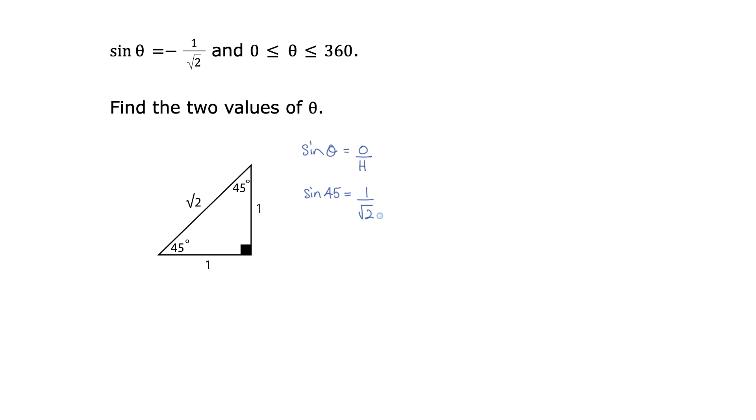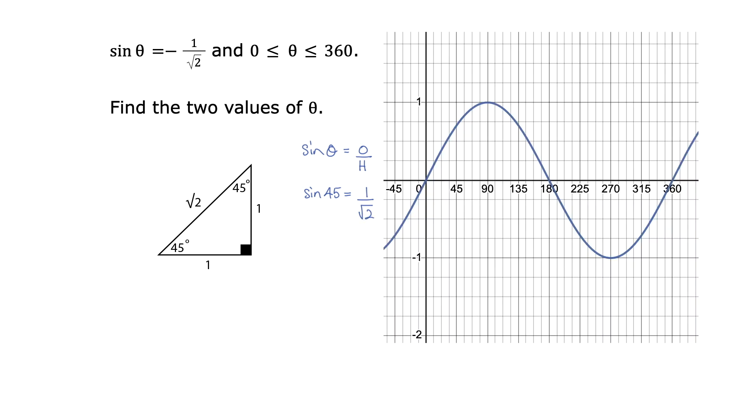So let's draw in the sine wave on a little graph here. Let's mark in 45 degrees. So if we go across from 45 where it hits the curve here, we know that this point here is 1 over root 2. And we can draw in that line.